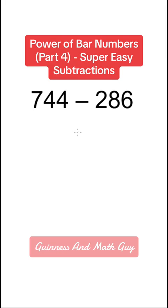Suppose we want 744 minus 286. We can write that 744 minus 286 like that. And we go from left to right.